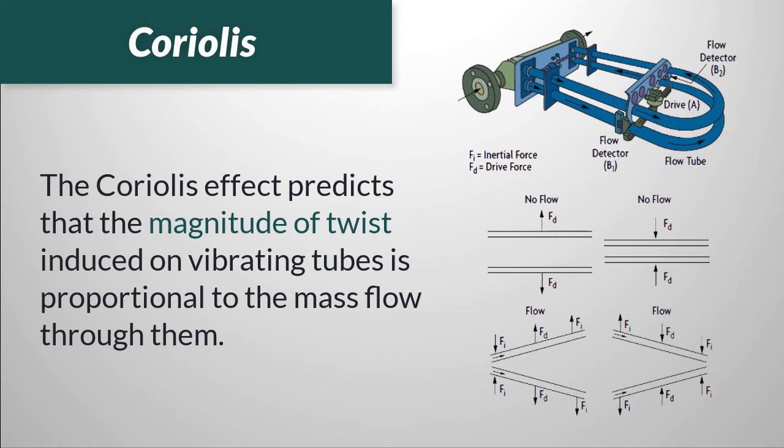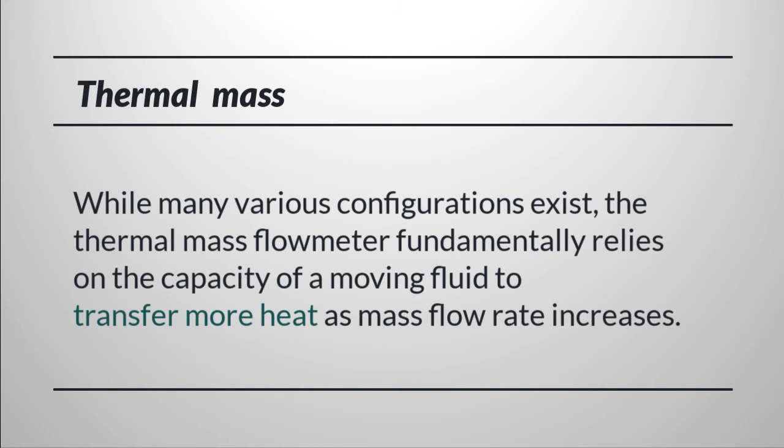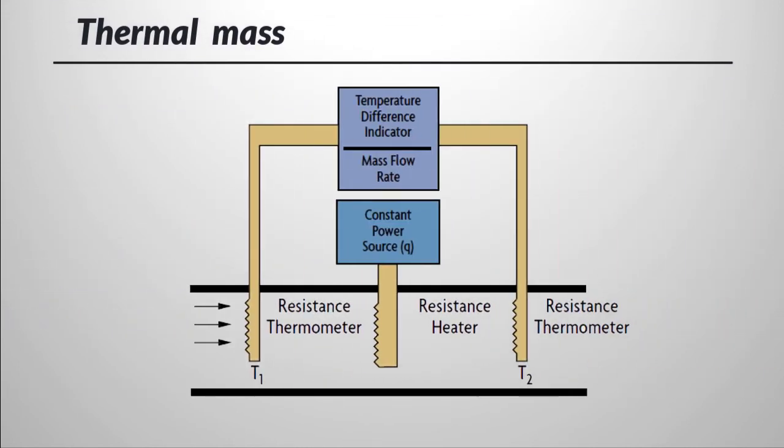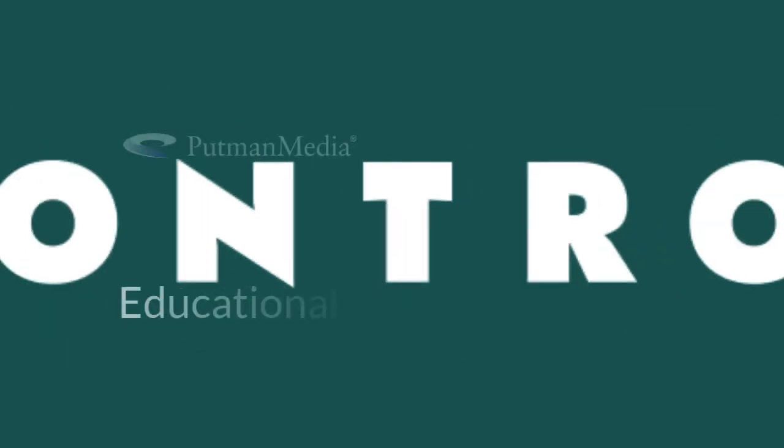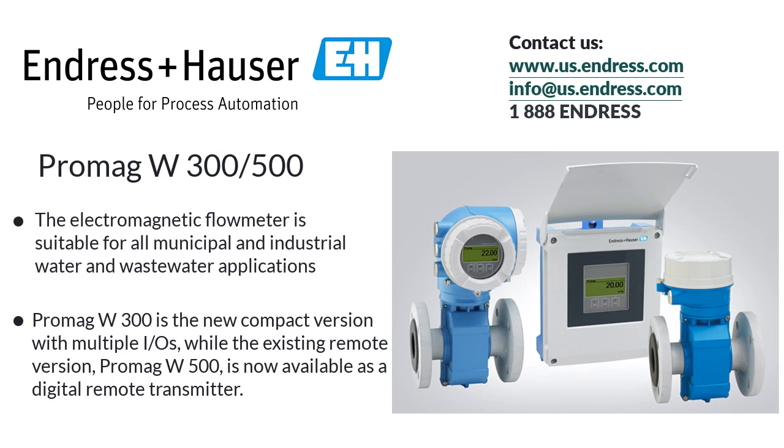Our final flow meter is the thermal mass flow meter, which measures the mass flow rate of gases and liquids by introducing a known amount of heat into the flowing stream and measuring an associated temperature change, or by maintaining a probe at a constant temperature and measuring the energy required to do so. They are often used for monitoring or controlling mass-related processes, such as the chemical reactions that depend on mass flows of ingredients. The Endress & Hauser ProMag electromagnetic flow meter is suitable for all municipal and industrial water and wastewater applications. The ProMag W300 is the most compact version with multiple IOs, while the existing remote version, ProMag W500, is now available as a digital remote transmitter. Learn more at www.us.endress.com